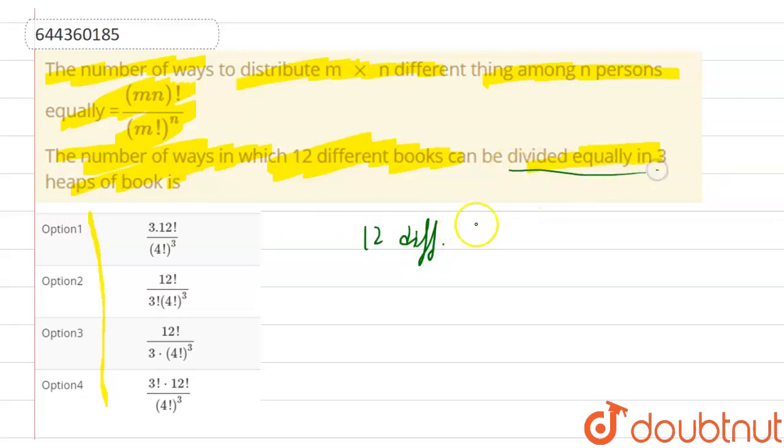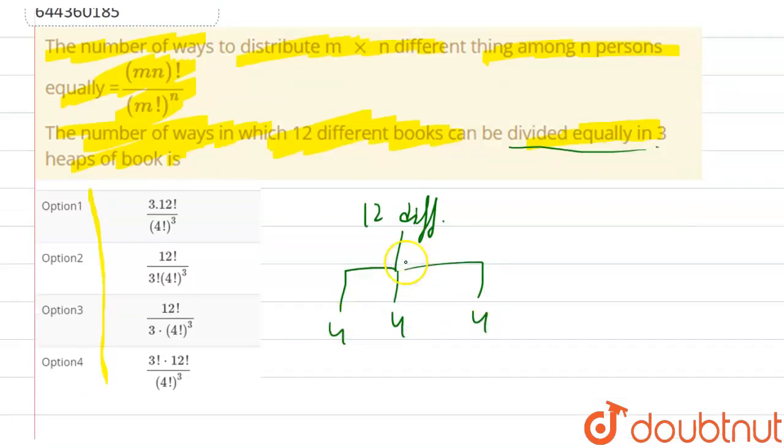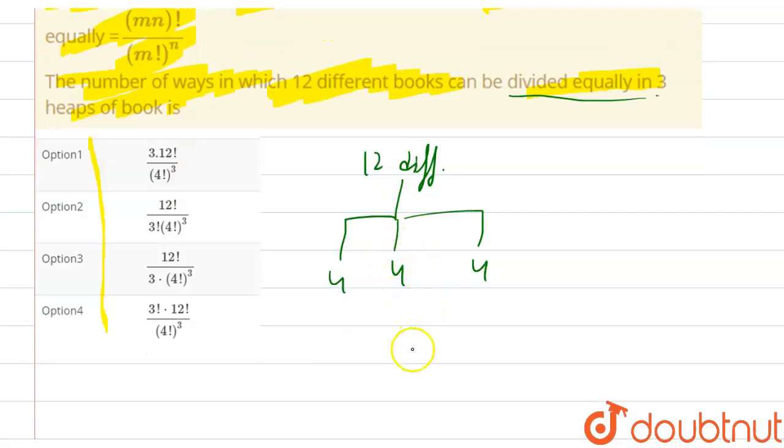We have to divide them into three. Now there is only one way possible to divide them equally into three, which is we divide four, four, and four. So from here we are getting m is equal to four and n is equal to three.